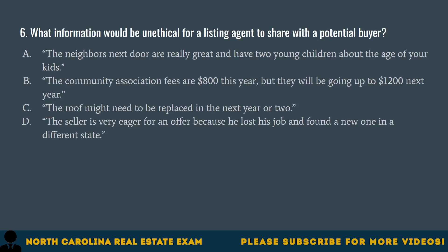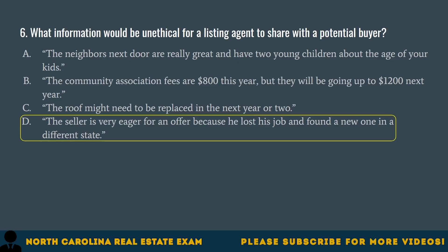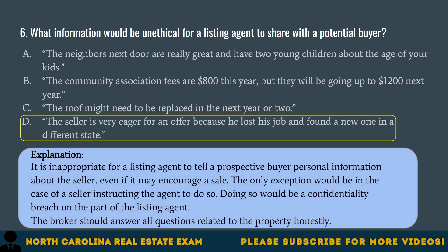Question 6. What information would be unethical for a listing agent to share with a potential buyer? A. The neighbors next door are really great and have two young children about the age of your kids. B. The community association fees are $800 this year, but they will be going up to $1,200 next year. C. The roof might need to be replaced in the next year or two. D. The seller is very eager for an offer because he lost his job and found a new one in a different state. The correct answer is D. It is inappropriate for a listing agent to tell a prospective buyer personal information about the seller, even if it may encourage a sale. The only exception would be in the case of a seller instructing the agent to do so. Doing so would be a confidentiality breach. The broker should answer all questions related to the property honestly.